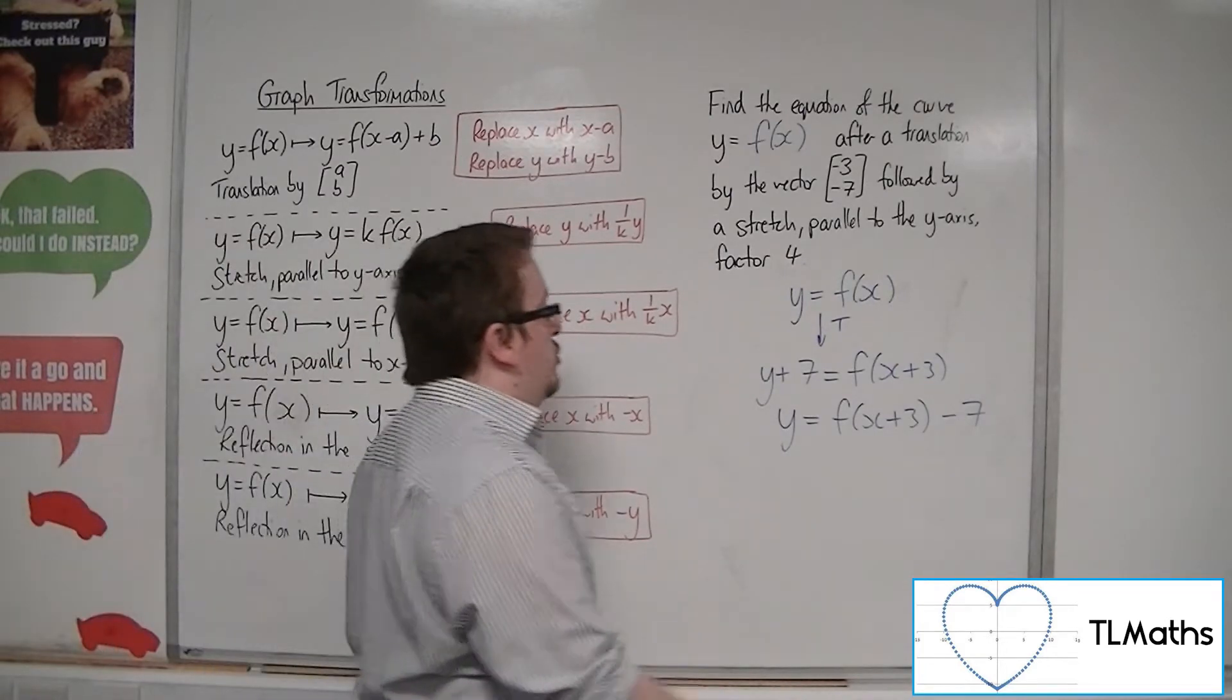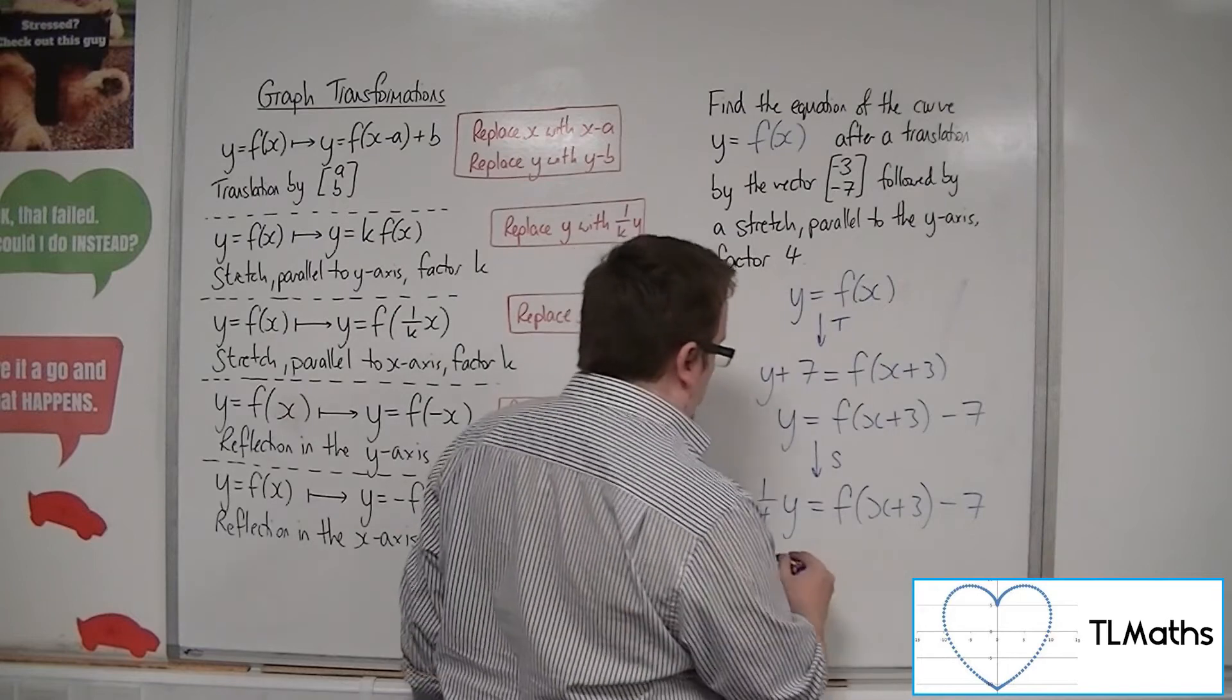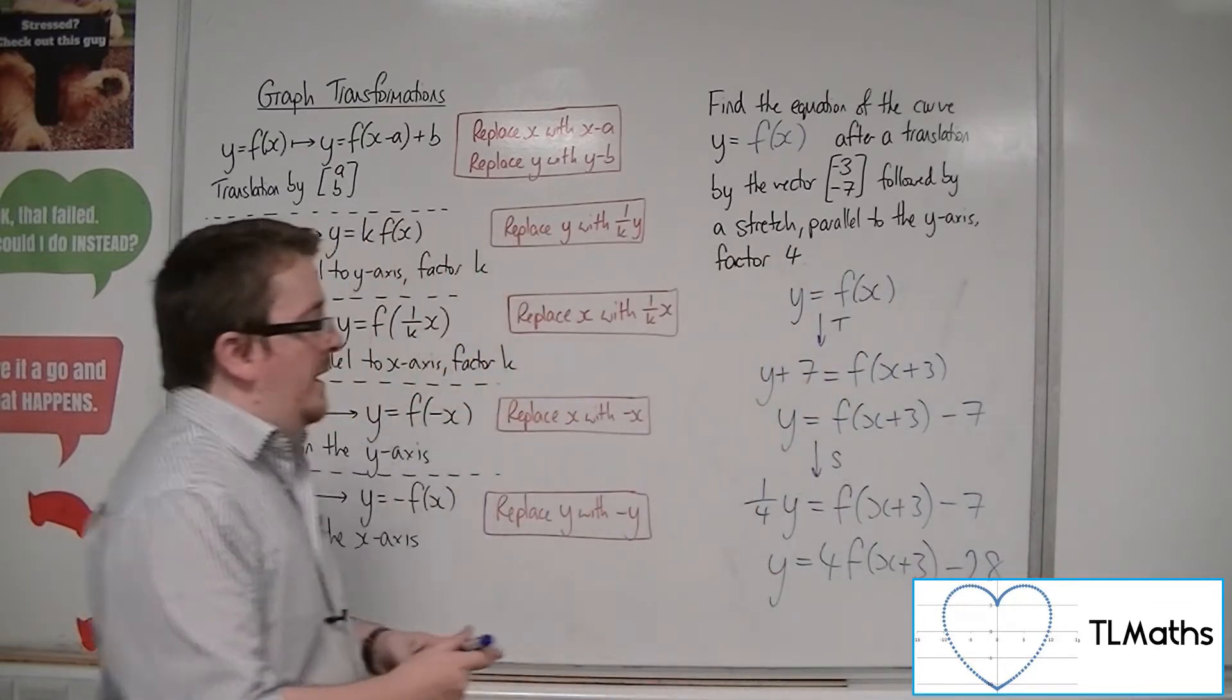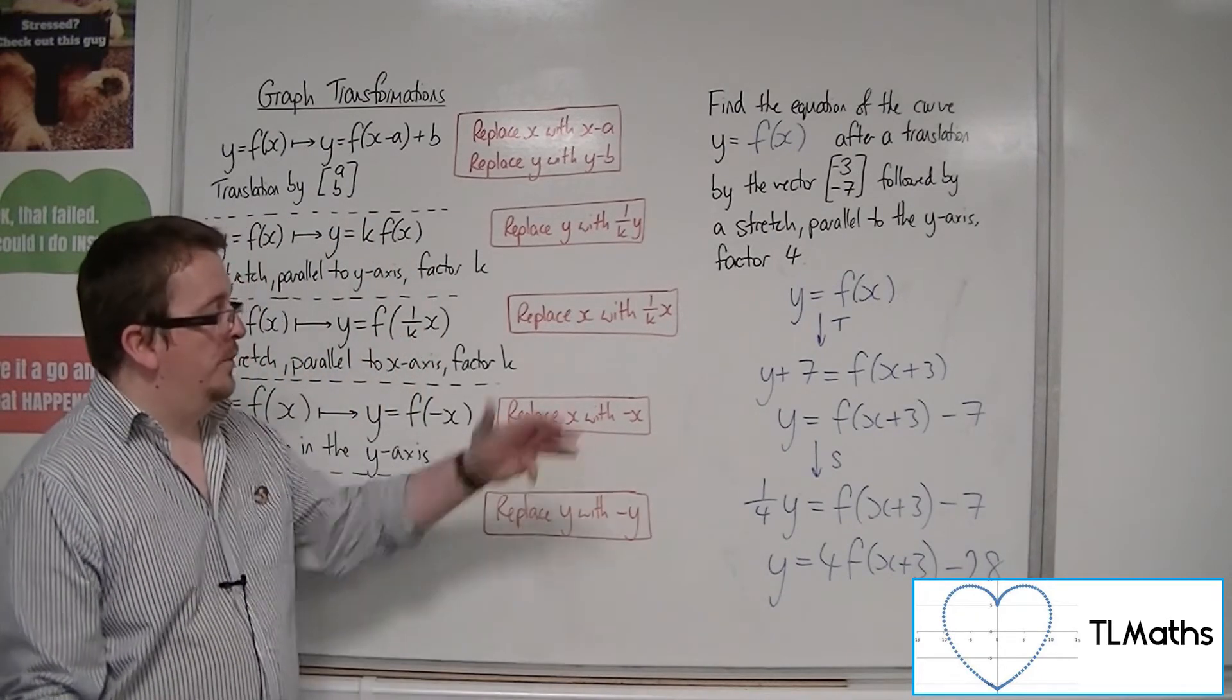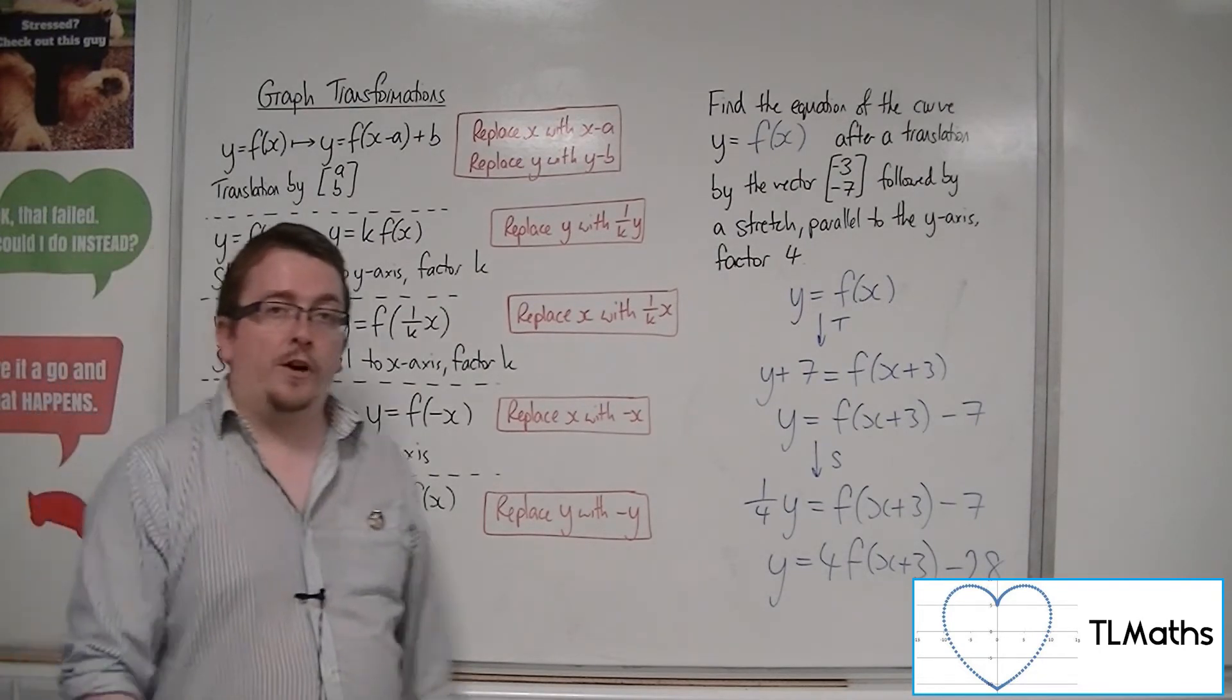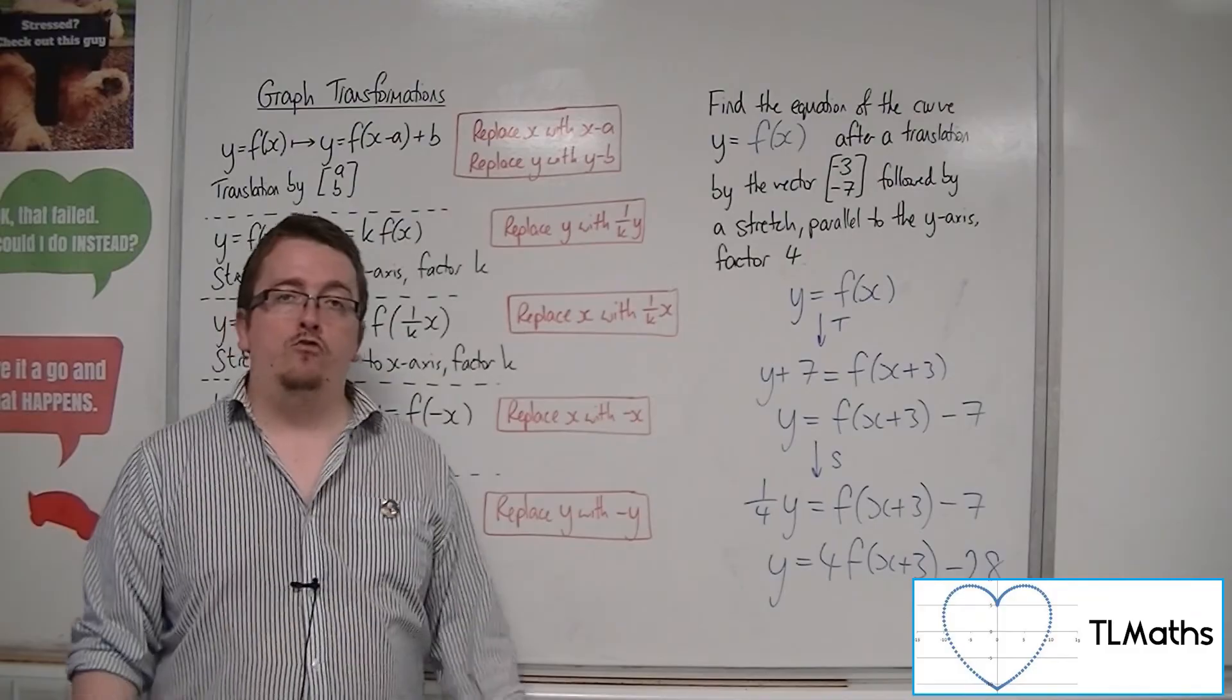And then followed by the stretch. So we'll have a quarter y equals f of x plus 3 minus 7. Multiply through by the 4. And that is the general form of the transformed function of x. Okay, so you can use this replacement method on combinations in order to find the new equation after a combination of transformations. Just make sure that you're doing it in the right order.